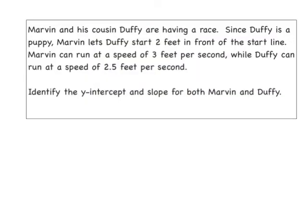Now it's your turn. Marvin and his cousin Duffy — and Marvin really does have a cousin Duffy — are having a race. Since Duffy is a puppy, Marvin lets Duffy start two feet in front of the start line. Marvin is at the start line. Marvin can run at a speed of three feet per second, while Duffy can run at a speed of 2.5 feet per second. Identify the y-intercept and the slope for both Marvin and Duffy.